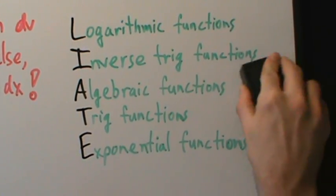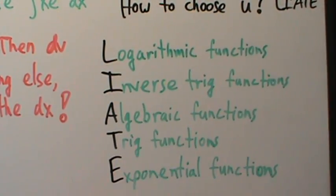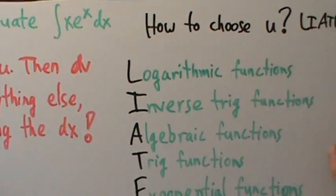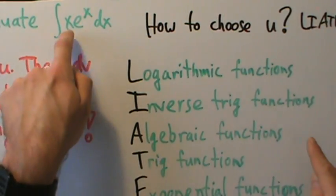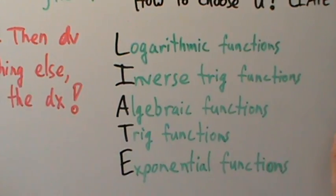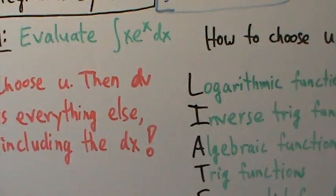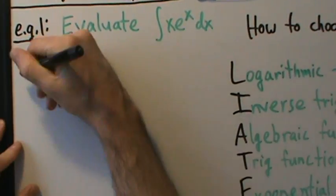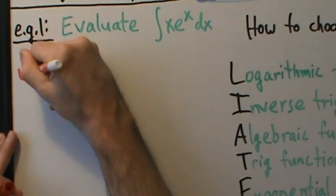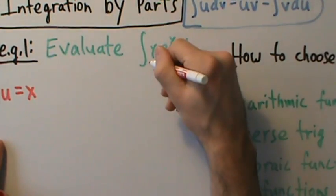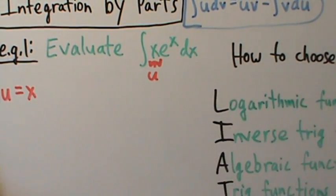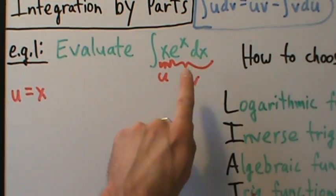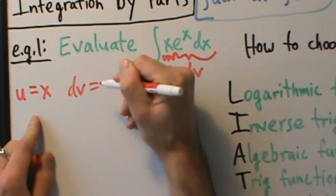Look at the integral, go down the LIATE list, and choose u to be the first type of function that appears. We have x and e^x. No logarithmic functions, no inverse trig functions — but we do have an algebraic function: x. So we choose u to be x. Once we've chosen u = x, then dv is automatically everything else including the dx, so dv = e^x dx.